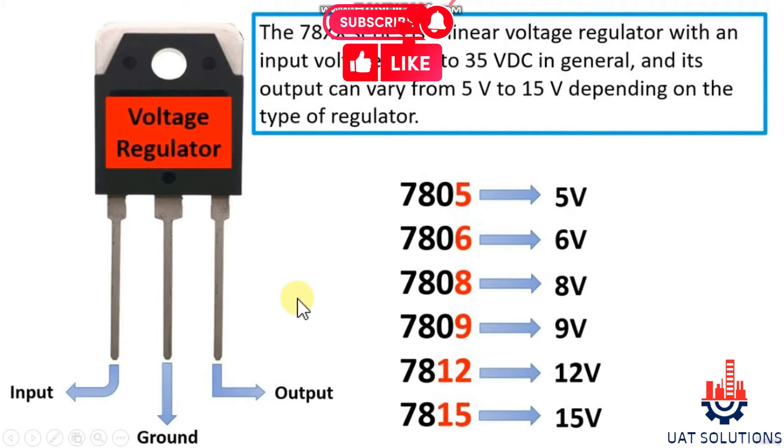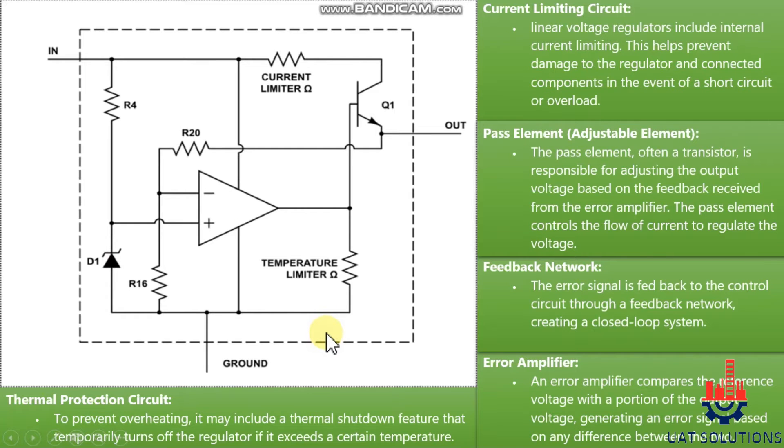A linear voltage regulator has three terminals: input, ground, and output. Let's understand what actually happens inside a linear voltage regulator, its components, and their functions.